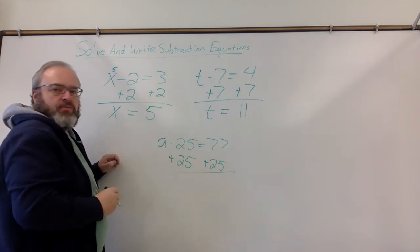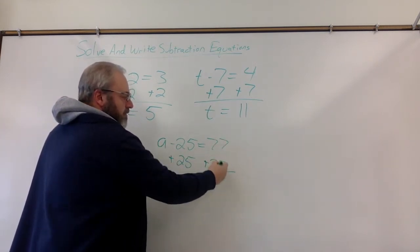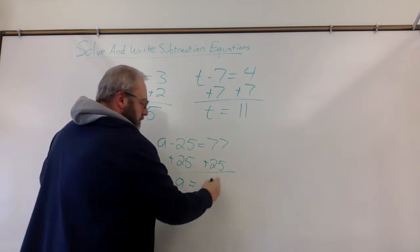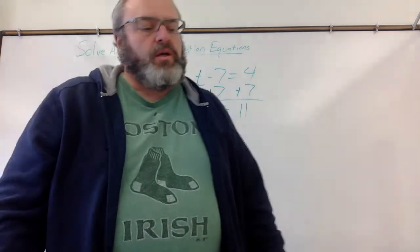I've got to do the same thing over here. The minus 25 and the plus 25 cancel out, leaving just a. 77 plus 25 is 102. So the answer there is 102.